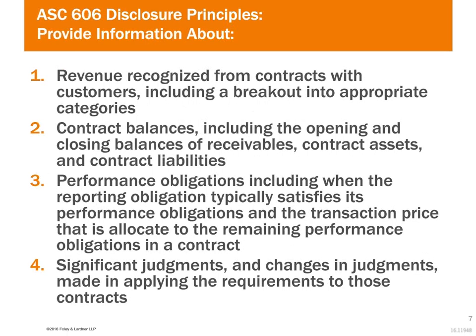The disclosure slide lays out the different requirements. Some of the first two items are things that are already required today. Items three and four are new — particularly item four: significant judgments, changes in the judgments, and how those were applied in recognizing contracts and how they may have changed from year to year. You're going to be providing more information. Think about situations where you have goodwill and are testing it for impairment every year — all the disclosures around those estimates and inputs — that same idea is going to translate into your revenue disclosures.